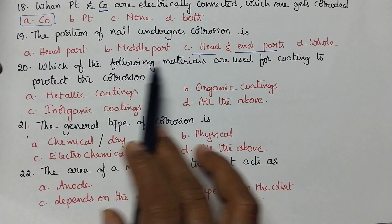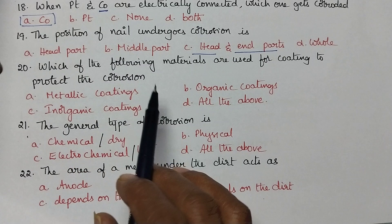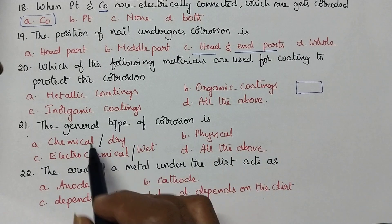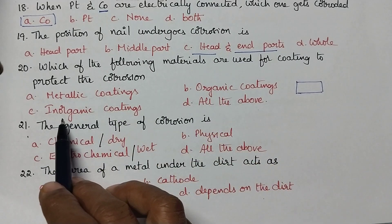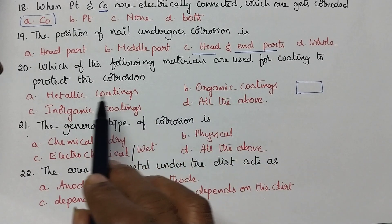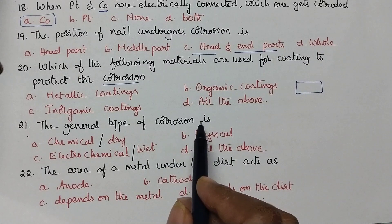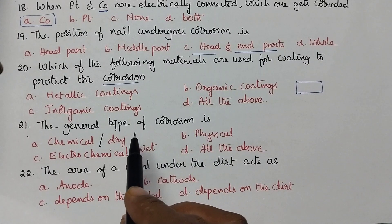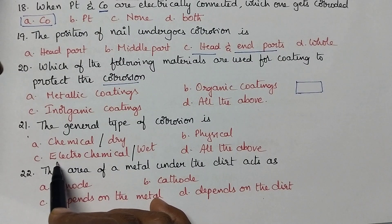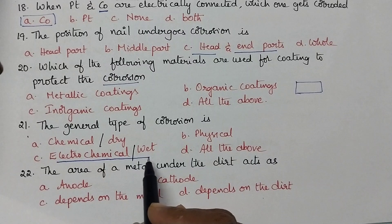Materials used for coating to protect against corrosion include metallic coatings, organic coatings, and inorganic coatings — all of the above methods can be used. Corrosion can be classified into two types: dry corrosion and wet corrosion. The most general and common type is electrochemical corrosion, also known as wet corrosion.